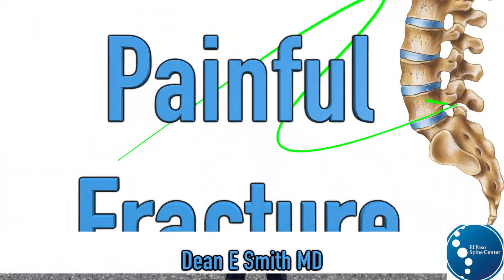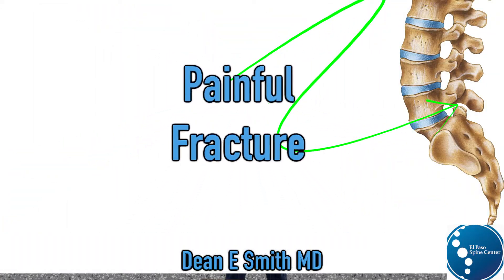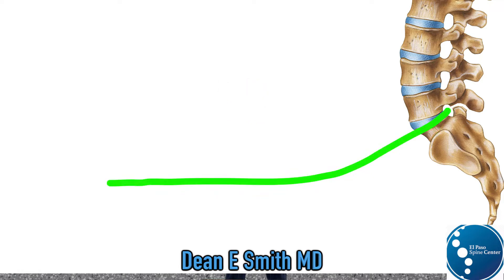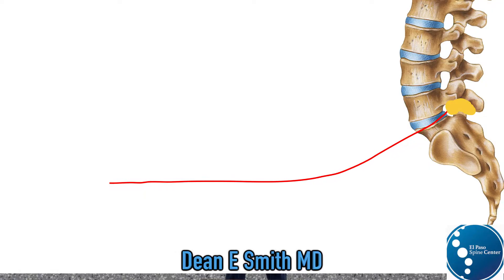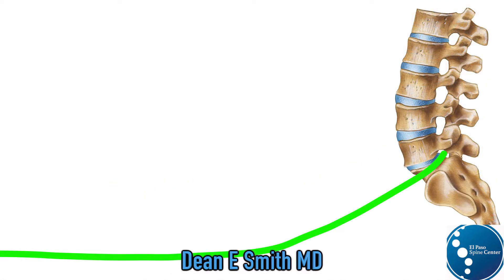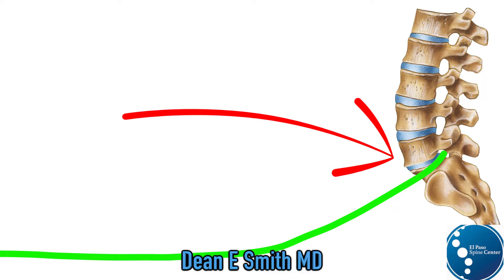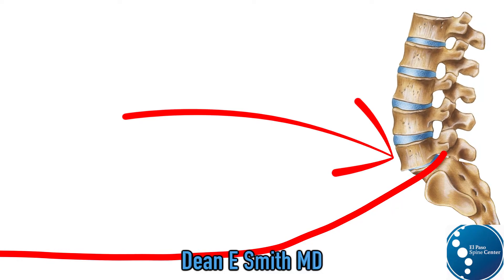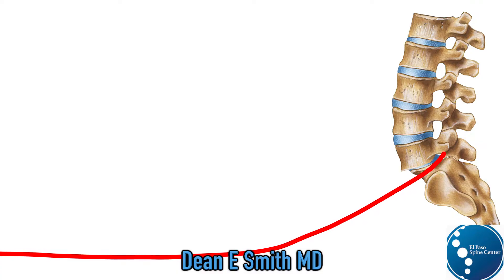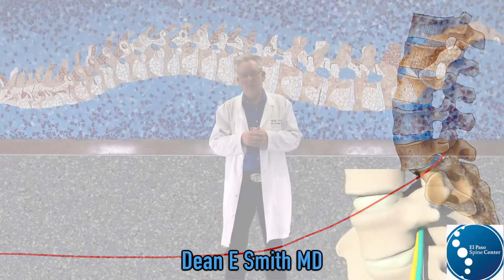Pain comes from the fracture itself — as it moves, it can cause pain. As it tries to heal, it can develop a callus and fibrous tissue that can pinch the sciatic nerve, causing pain in the back, buttock, and down the leg. Also, if one bone slips on the other, that can pinch the L5 nerve, causing back, buttock, and leg pain as well.